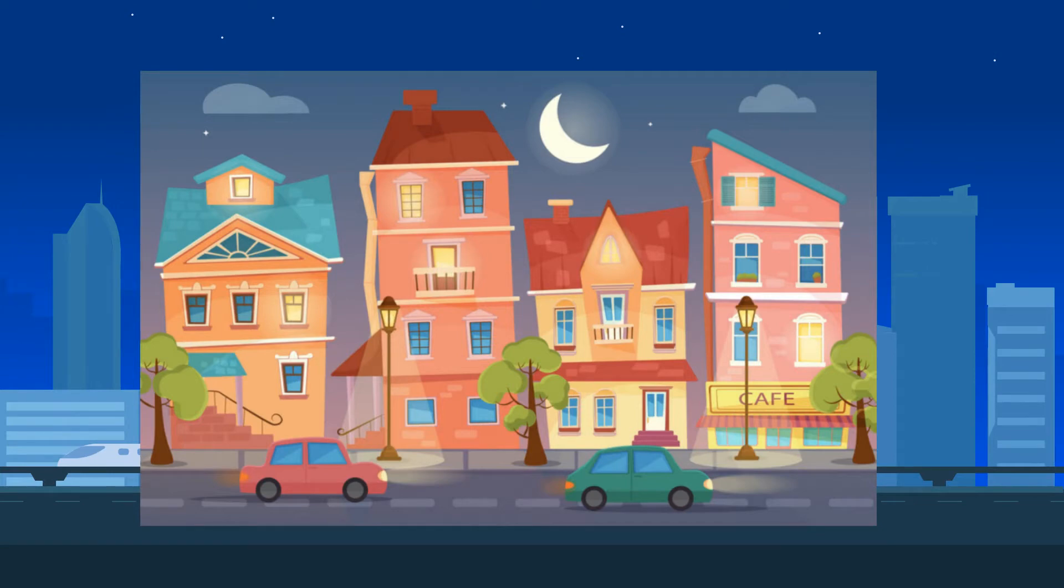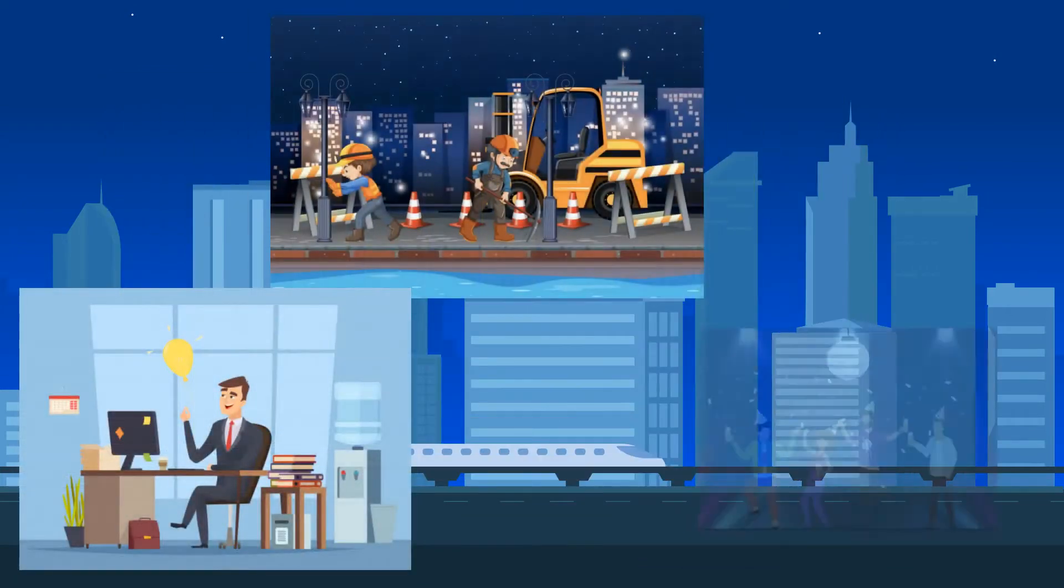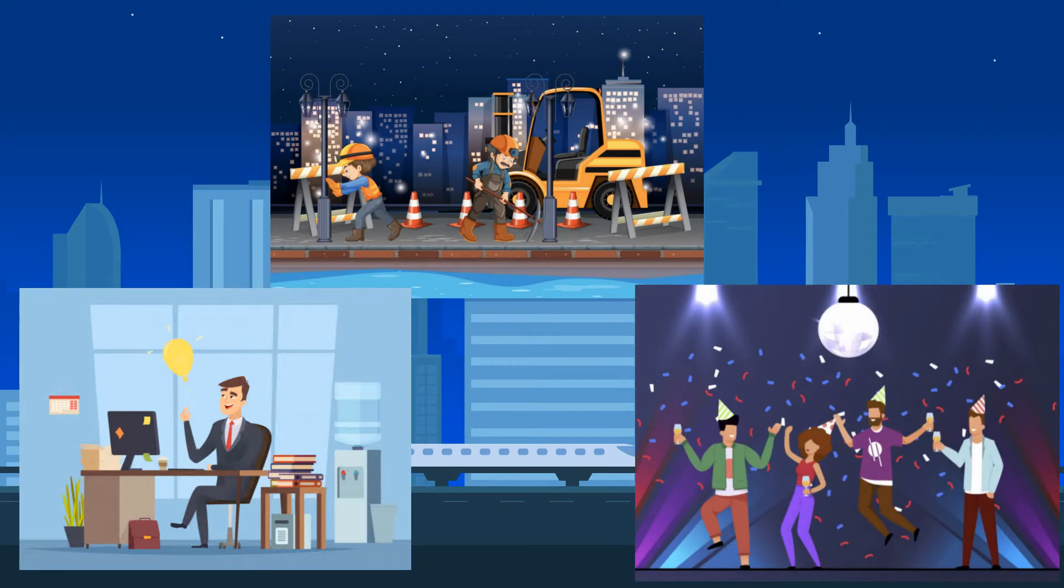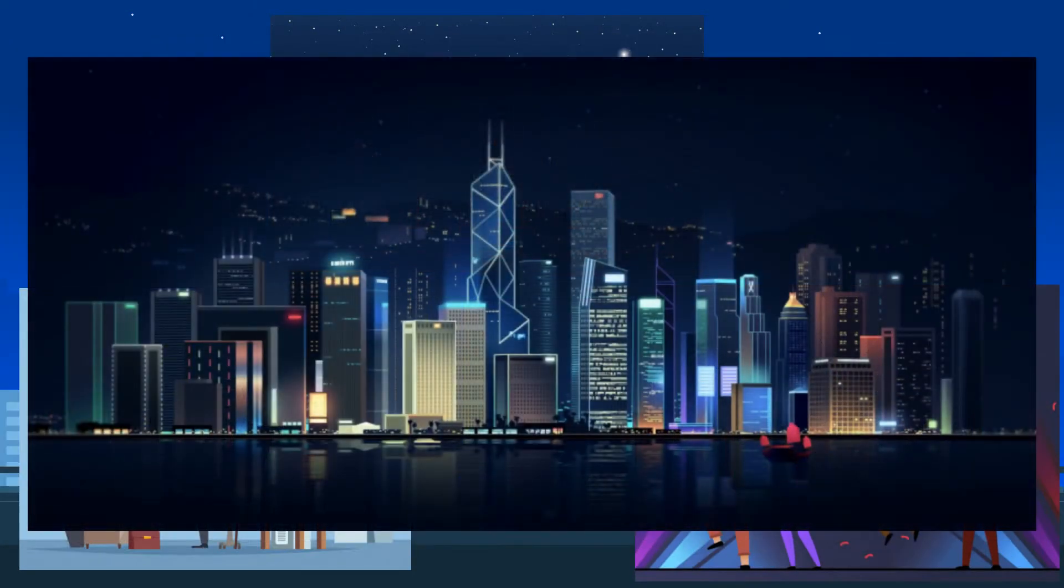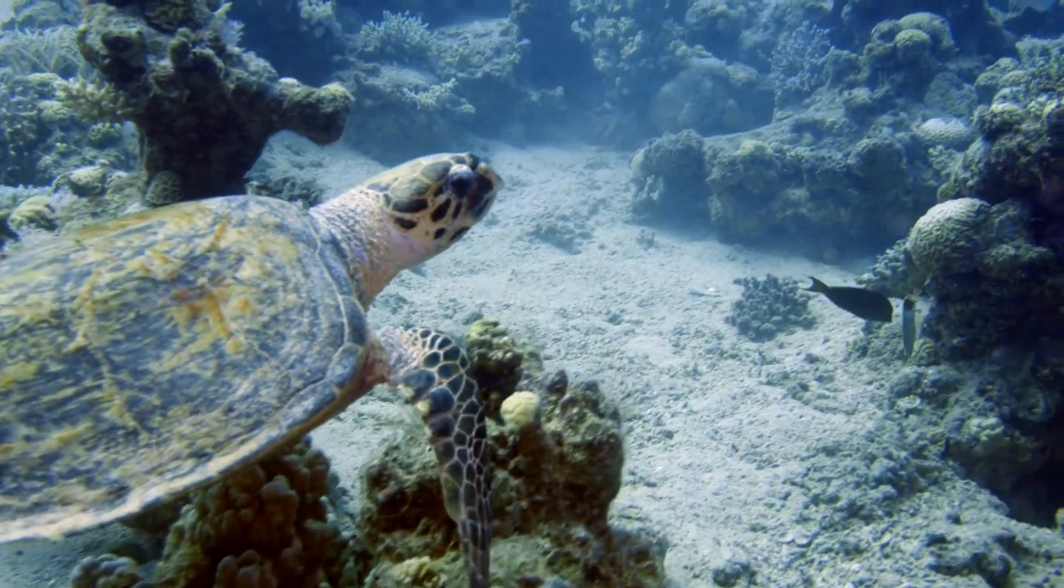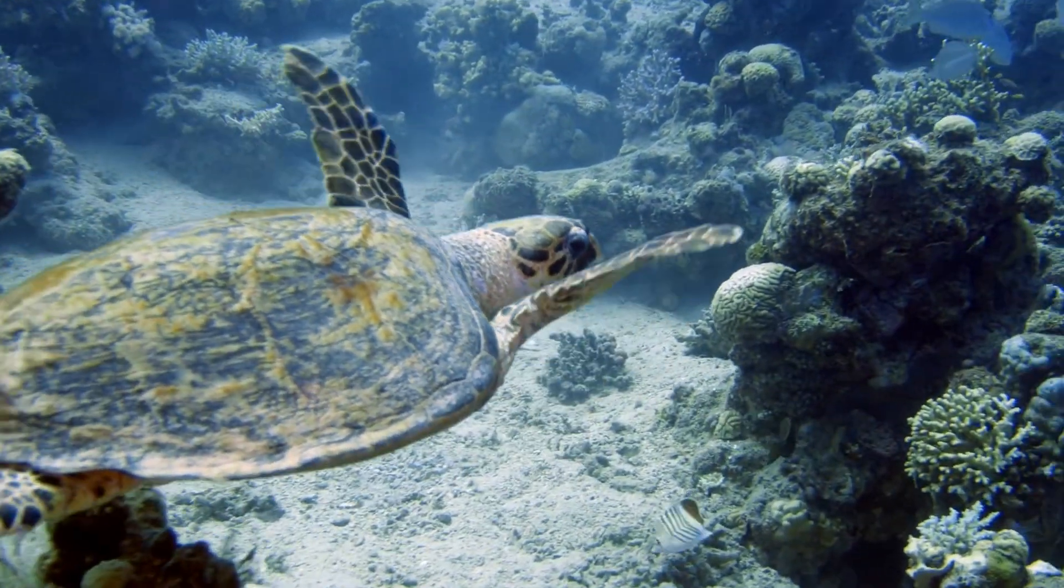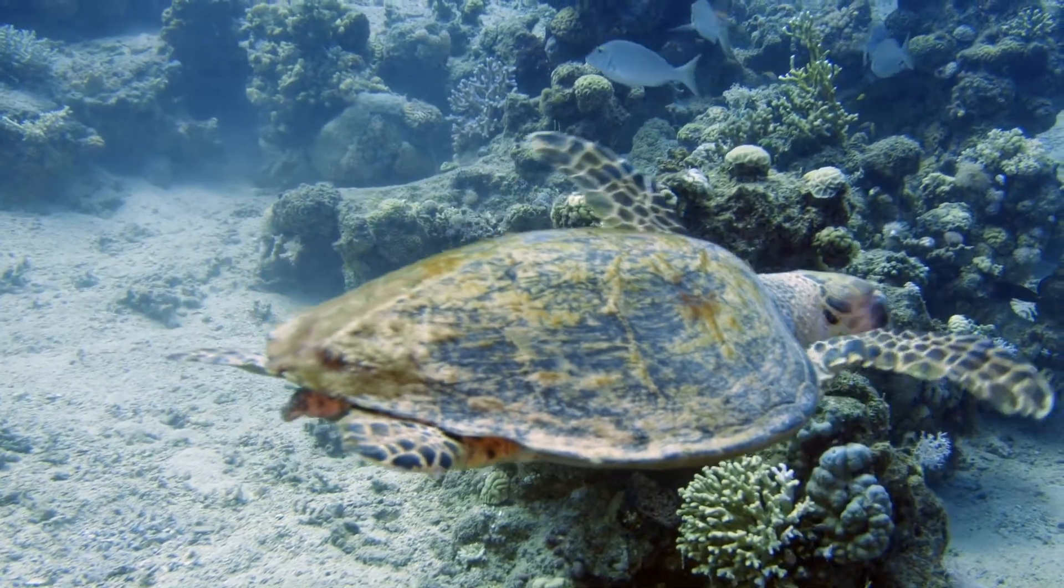This amazing invention has allowed us to work, build, and party longer and has been incredibly important in the development of our society and our technology. But unfortunately, like a lot of things humans produce, artificial light can have negative effects on animals.